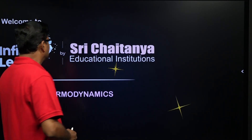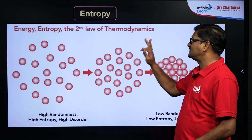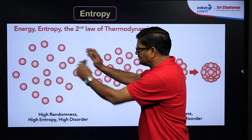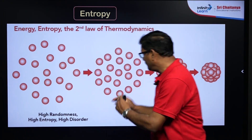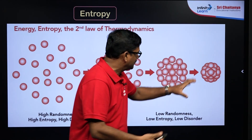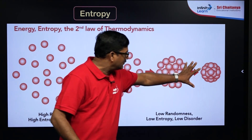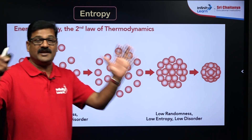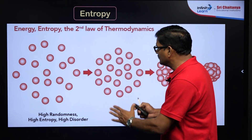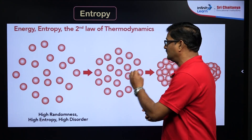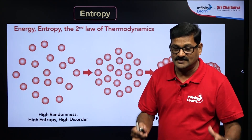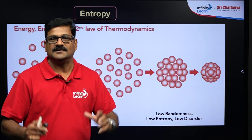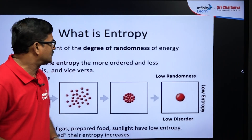Let us look at thermodynamics: energy, entropy, and the second law of thermodynamics. Here you can see particles which are free and random in state, and here these particles are compactly present — arranged in an organized and compact manner. On the other side, they are arranged freely and in a disordered way. We need to learn about the concept of entropy based on this disorganized pattern of particles.